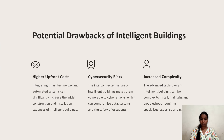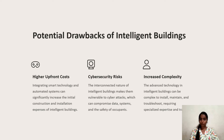Potential drawbacks of intelligent buildings include higher upfront costs, cybersecurity risks, and increased complexity. Integrating smart technology and automated systems can significantly increase initial construction and installation expenses. The interconnected nature of intelligent buildings makes them vulnerable to cyber attacks, which can compromise data, systems, and the safety of occupants. The advanced technologies can also be complex to install, maintain, and troubleshoot, requiring specialized expertise.